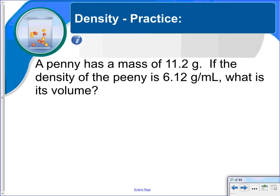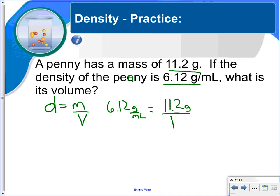A penny has a mass of 11.2 grams. If the density of the penny is 6.12 grams per milliliter, what is the volume? So density is equal to mass divided by volume. You know the density is 6.12 grams per milliliter. The mass is 11.2 and you're looking for the volume.